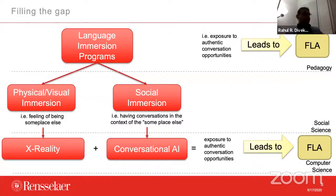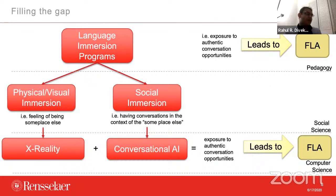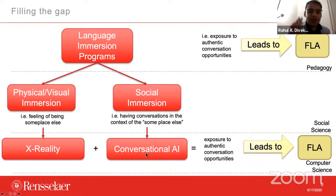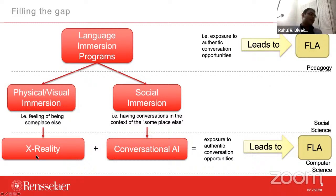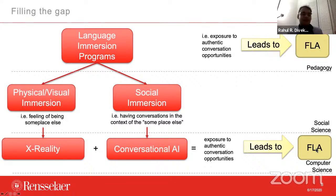In computer science terms, what enables physical or visual immersion is extended reality, or XR — an encompassing term for virtual reality headsets, mixed reality, and augmented reality. These make you feel as if you're somewhere else. And conversational AI can give you the social immersion aspect — by talking to an AI agent, you actually feel like you're talking to a real person. If I put extended reality together with conversational AI, you get a feeling of being somewhere else, having a conversation with another person, giving you the same exposure to authentic conversational opportunities. That would lead to foreign language acquisition. That's my hypothesis.